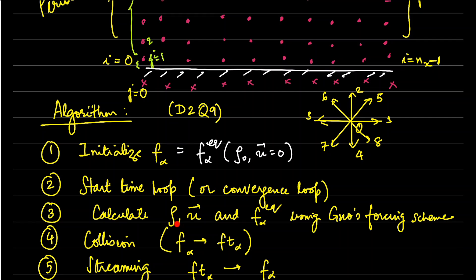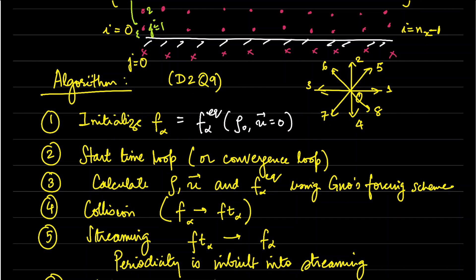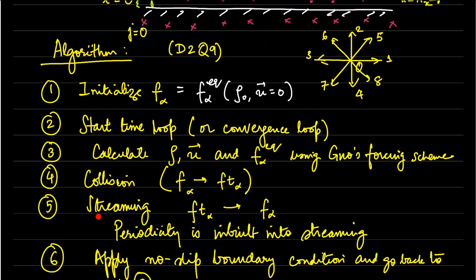In the time loop we first calculate the density, velocity, and equilibrium distribution using the Guo forcing scheme. Density is obtained using the zeroth moment, and the velocity used in the equilibrium distribution must include the external force, which is the pressure gradient in this problem. Once we have the equilibrium distribution we perform the collision step, where F_alpha at time t is moved into a temporary variable Ft_alpha representing post-collision distributions.